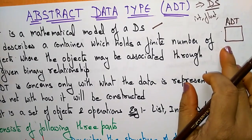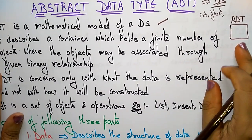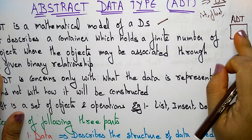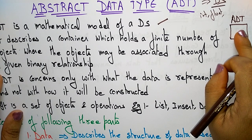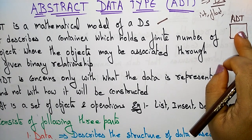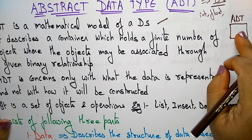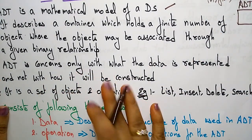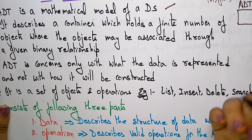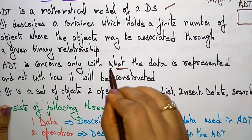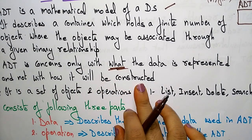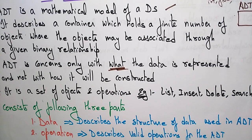An abstract data type is just called a container which holds a finite number of objects. These objects are stored in the abstract data type, where the objects may be associated with given binary relationships. The abstract data type is concerned only with what the data is represented, not with how it will be constructed.